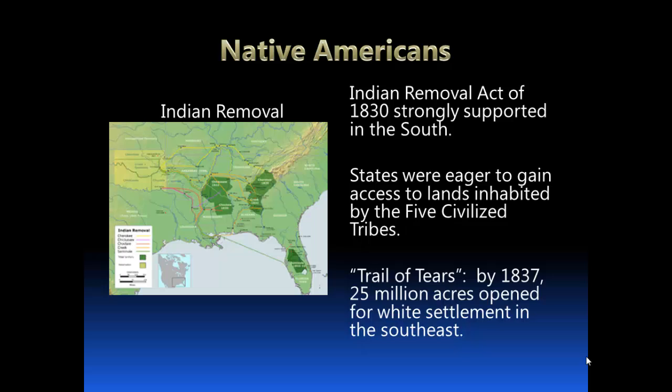The Trail of Tears was essentially the paths by which the tribes were resettled into the West. By 1837, 25 million acres were open for white settlement in the southeast because of this. The lands where Native Americans were established — largely Oklahoma, Kansas, and Nebraska — were not particularly desirable and weren't very fertile. They were really taken from lands with a lot of promise and put on lands that no one else wanted, and that's where their reservations were established.